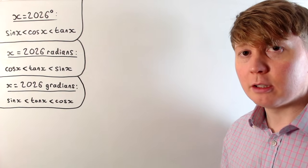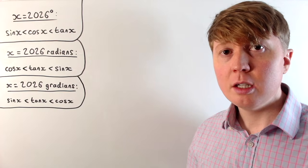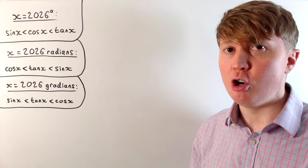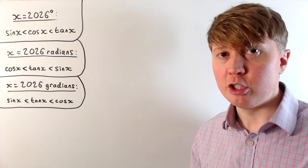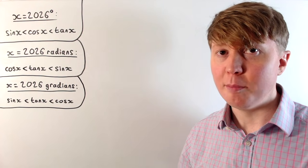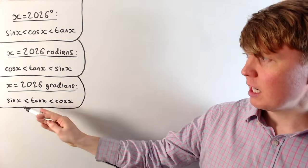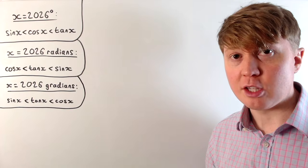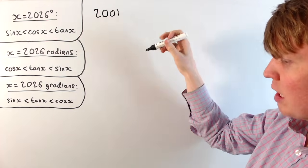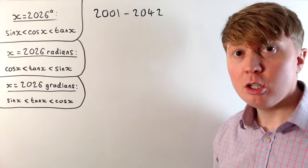We can also use an angle unit called gradians, which you might not have used before. We have 400 gradians as the same as 360 degrees or 2 pi radians, and this is essentially chosen so that a right angle is 100 gradians, an attempt to make angles more metric. The current order in gradians of 2026 gradians is sine is less than tan is less than cos, and we've had this order since 2001, and this order is going to continue all the way up until 2042.